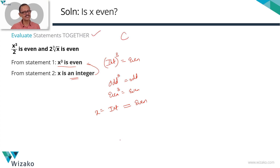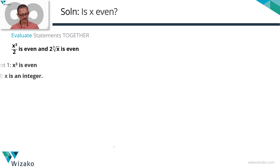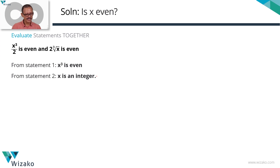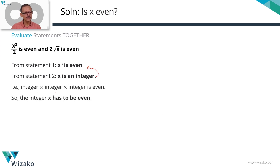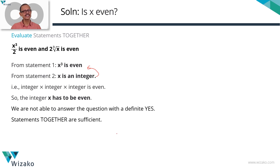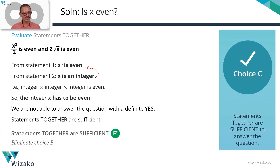Choice C is the answer. To summarize: combining the two statements, we plug in that X is an integer (from statement two) into statement one. Integer cubed equals an even number. Odd cubed can never be even; only an even integer cubed is even. So X must be an even number — we can answer the question with a definite yes. The statements together are sufficient, and choice C is the answer.